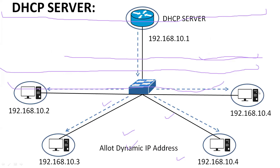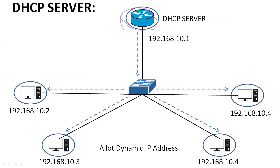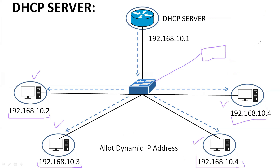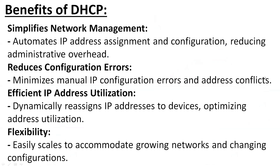Let's discuss this more clearly with a diagram. Here we have a DHCP server — basically the router acts as the DHCP server — and it automatically provides IP addresses to all the PCs. It has provided addresses like 192.168.10.2, 10.3, 10.4, and 10.5. If another PC is connected, it will also be provided an IP address, such as 192.168.10.5.